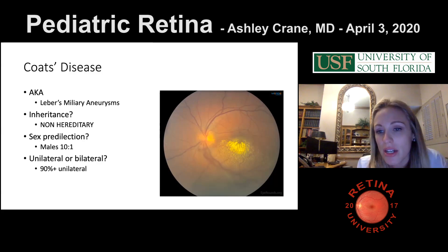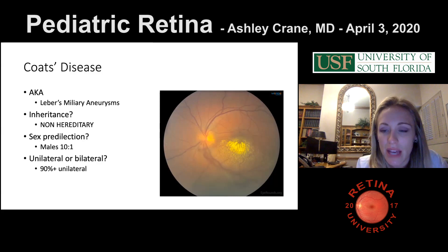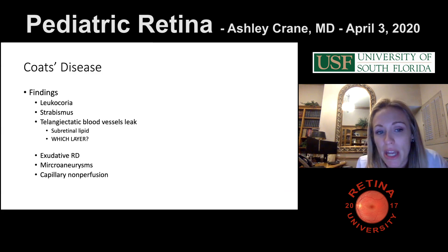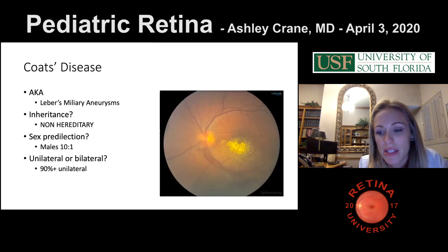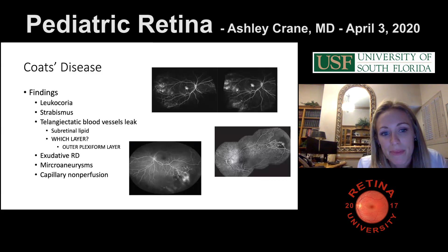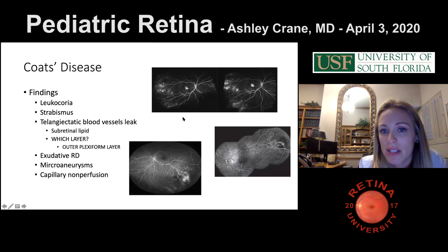Some patients can have peripheral retinal changes with Coats disease, but usually the active disease is in one eye. Findings include leukocoria, strabismus, telangiectatic blood vessels that leak causing subretinal and intraretinal lipid — notably in the outer plexiform layer. Exudative detachments with large yellow subretinal lipid deposits, microaneurysms, and capillary non-perfusion in the periphery are seen on FA.